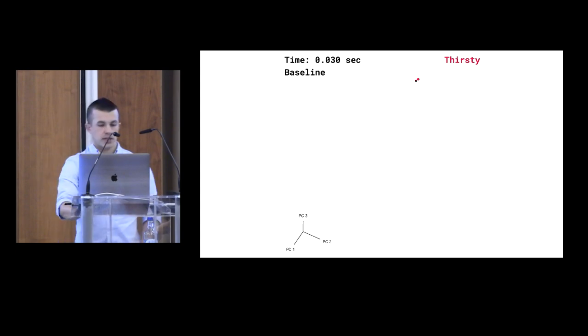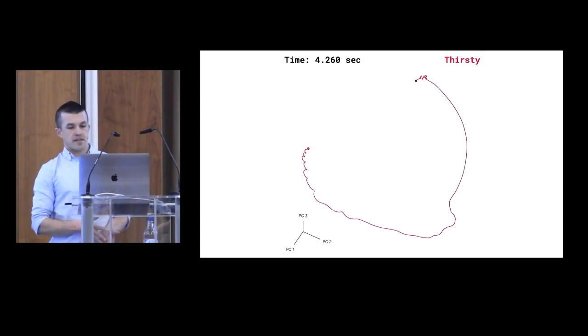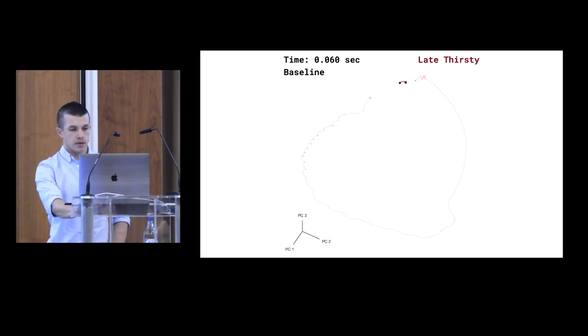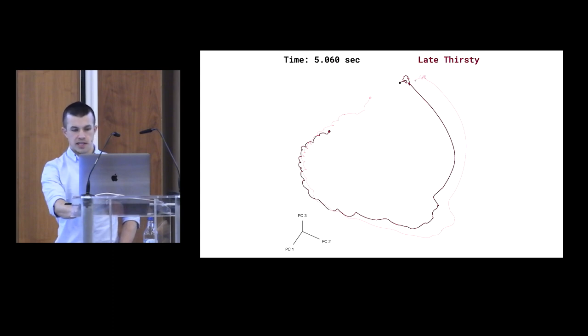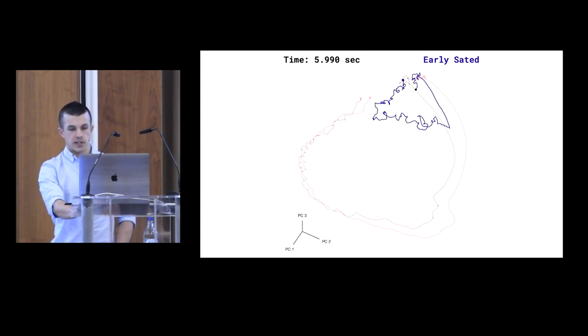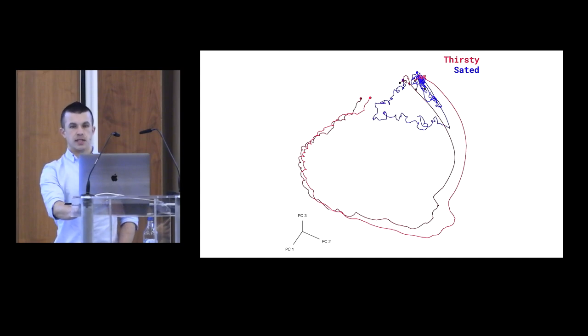First, thirsty trials. During baseline, the factors are relatively static, but when the odor is presented, the factors begin a large excursion that proceeds into the response period where the animal begins licking. You can see liquidated wiggles emerging that aren't fully washed out by averaging over trials. Next, the late thirsty trials, largely the same path, although the loop is slightly smaller. Next, the early sated trials where the animal is no longer licking reliably. We see that the response to odor is suppressed and doesn't proceed into the large loop that would normally accompany the licking response. And lastly, the final trials in the session where the sensory response appears, but then is quickly suppressed nearly entirely.